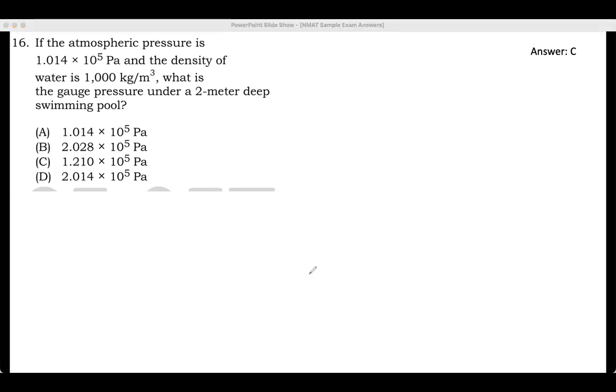Now, this is something that we normally get confused about. When we say gauge pressure, it's the pressure here. So we call this the gauge pressure. Here above is the atmospheric pressure, and if you add them, that is called the total pressure, or sometimes other books will call it the absolute pressure.